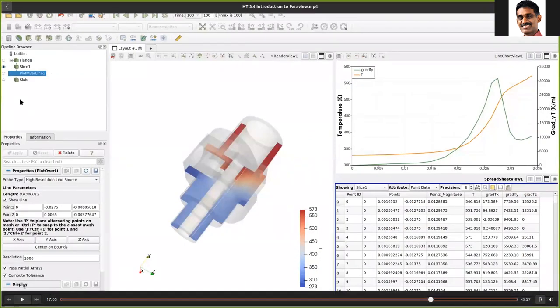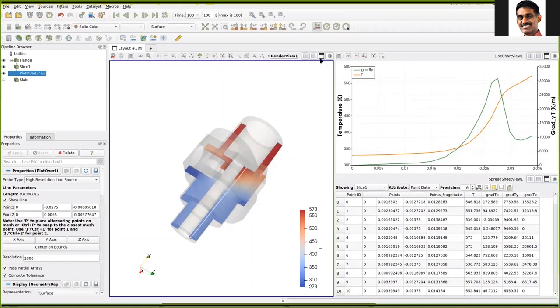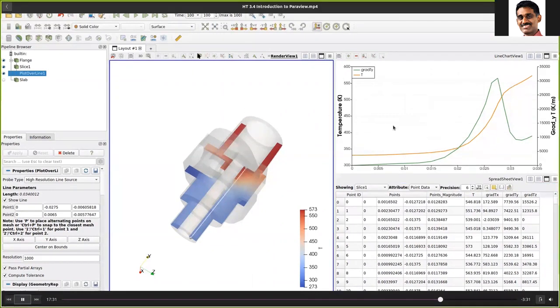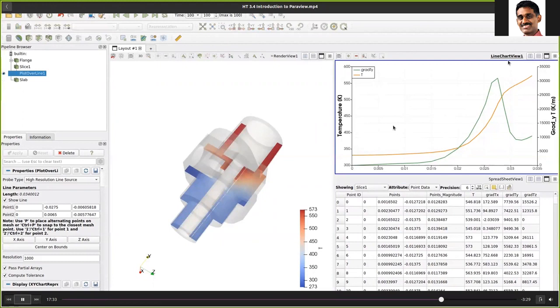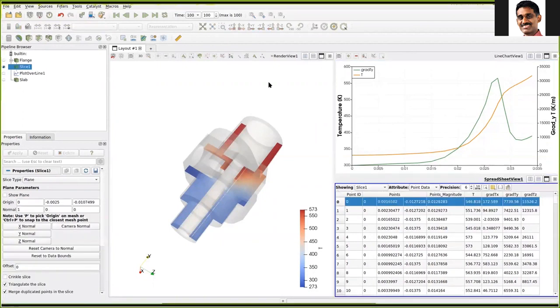One common mistake beginners make is to forget the connection between the two panels and the viewport. Notice that when we click on the viewport, it gets activated with a blue border. Clicking on the line chart view becomes the active viewport.